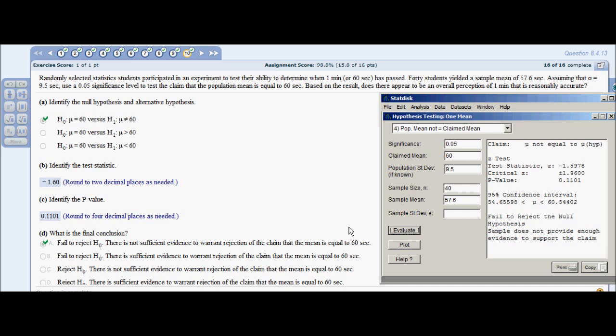Problem 10: Randomly selected statistic students participated in an experiment to test their ability to determine when one minute has passed. 40 students yield a sample mean of 57.6 seconds. Assuming that standard deviation is 9.5 seconds, use a 0.05 significance level to test the claim that the population mean is equal to 60 seconds. So your alternate will not equal 60 seconds.